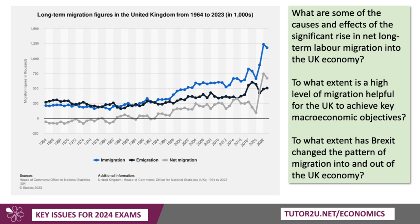My next topic is migration. This chart shows the figures for long-term migration into the UK — people who have stayed in the UK for at least 12 months. The grey line is net migration, which is the difference between the blue and the black line. What are the causes and effects of the significant rise in net migration into the UK? To what extent is a high level of migration helpful on a supply and demand side basis to help the UK achieve its key macro objectives? And to what extent has Brexit changed the pattern of migration both into and out of the UK economy? Please do follow the migration topic carefully — it appears specifically on certain exam board specs.